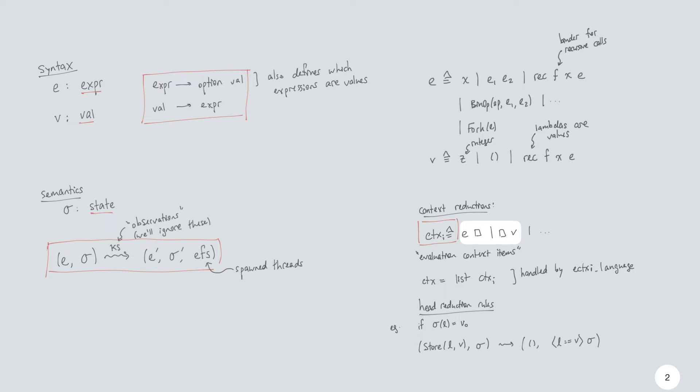And then the other evaluation context says we can only evaluate the function in an application after fully evaluating the right-hand side down to a value. So the combination of these two evaluation contexts is what means that this language has a right-to-left evaluation order.